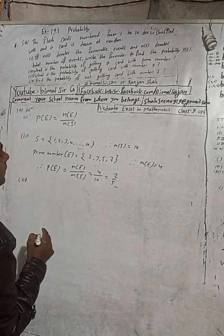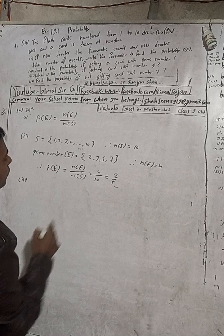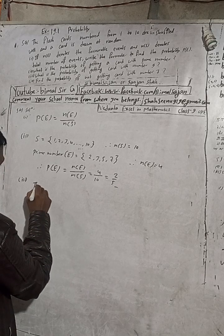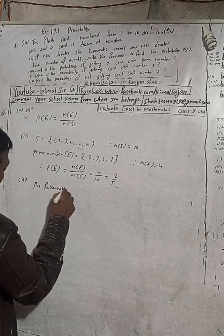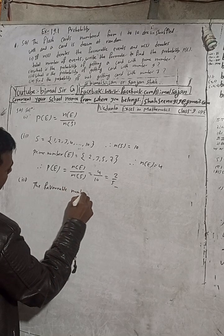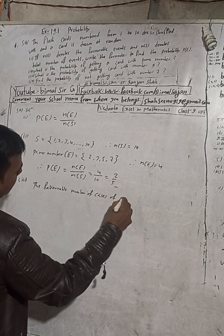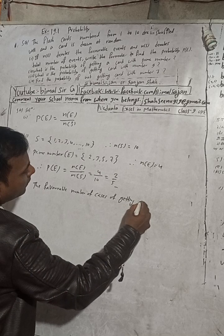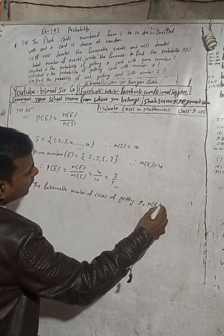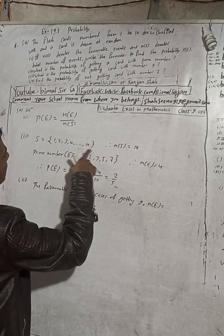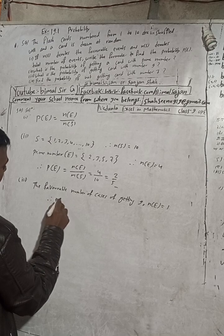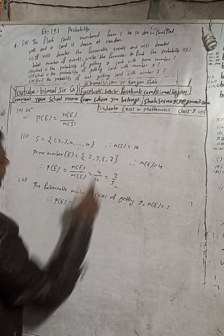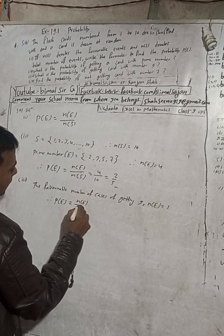Number 3: what is the probability of getting a card with number 9? The number 9 appears only once, so the favorable number of cases is 1. Therefore P(E), the probability of getting a card with number 9, equals n(E) by n(S), which is 1 by 10.